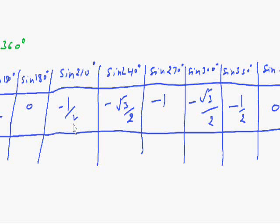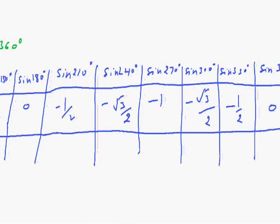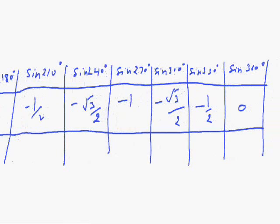Sin 270 is minus 1, sin 300 is minus square root 3 divided by 2, and sin 330 degree is 0.